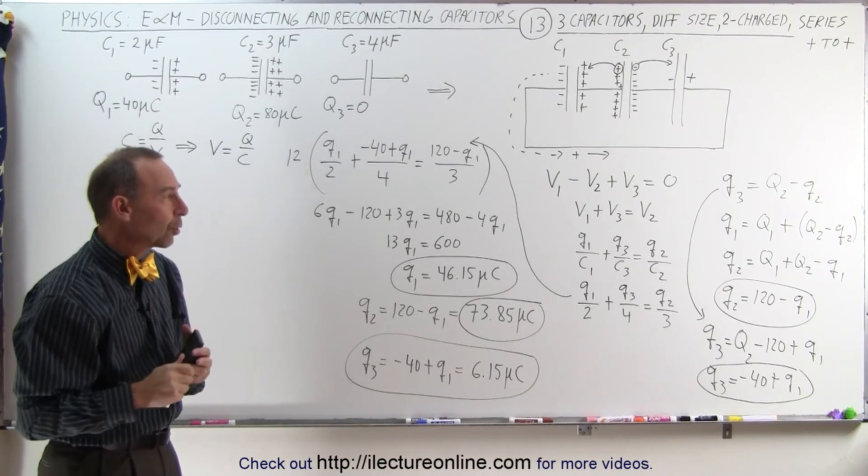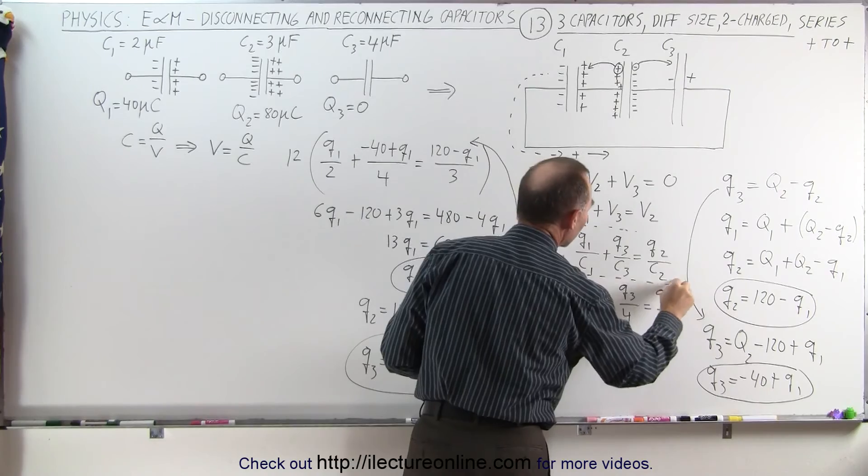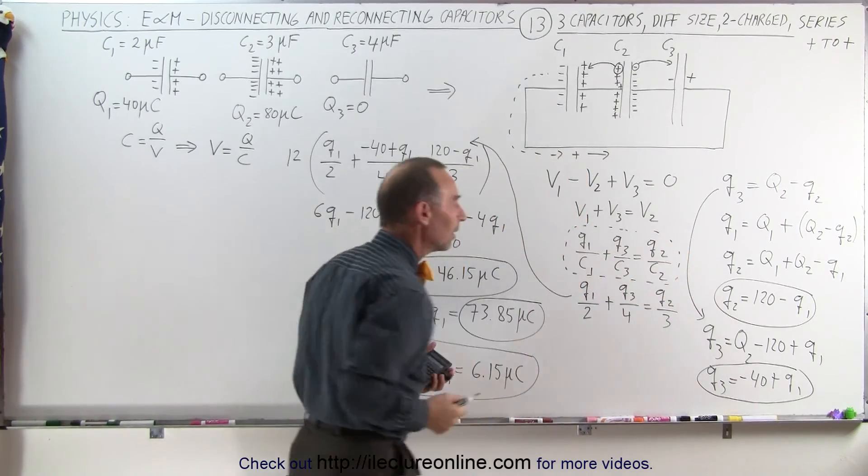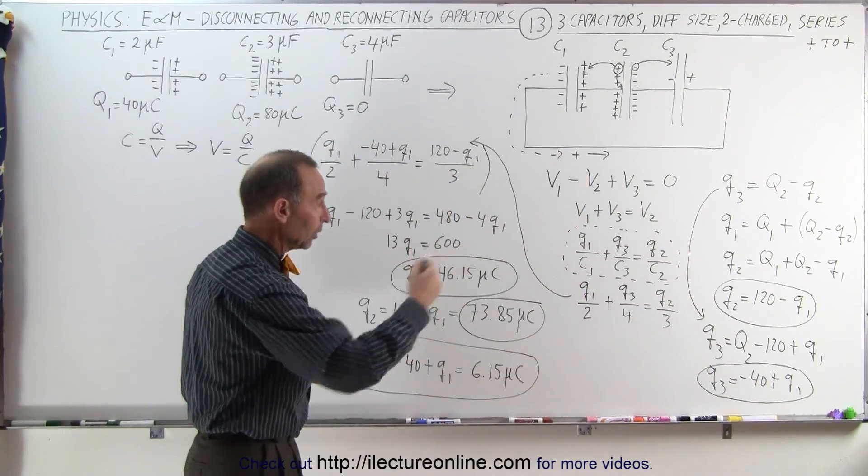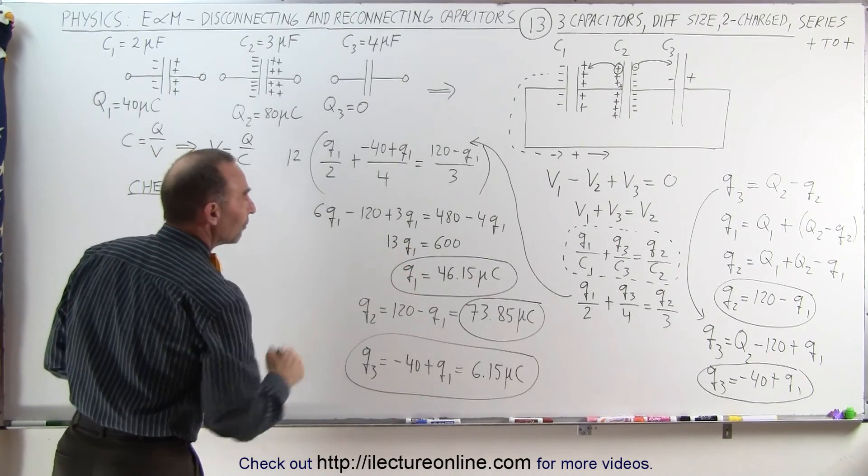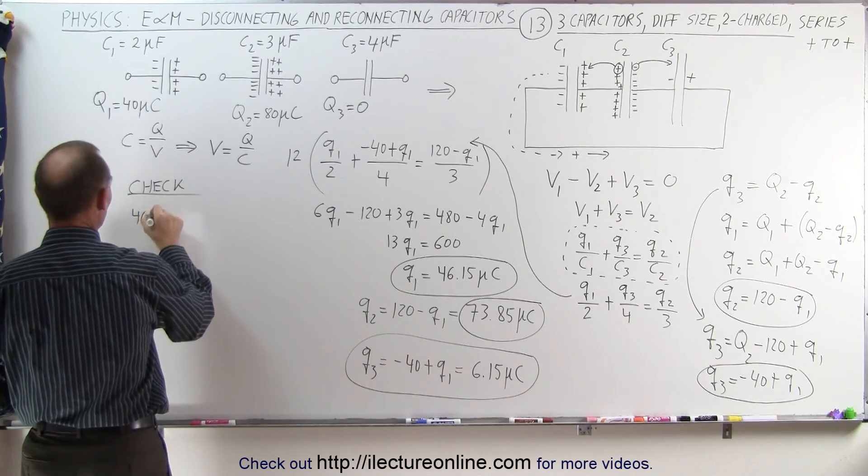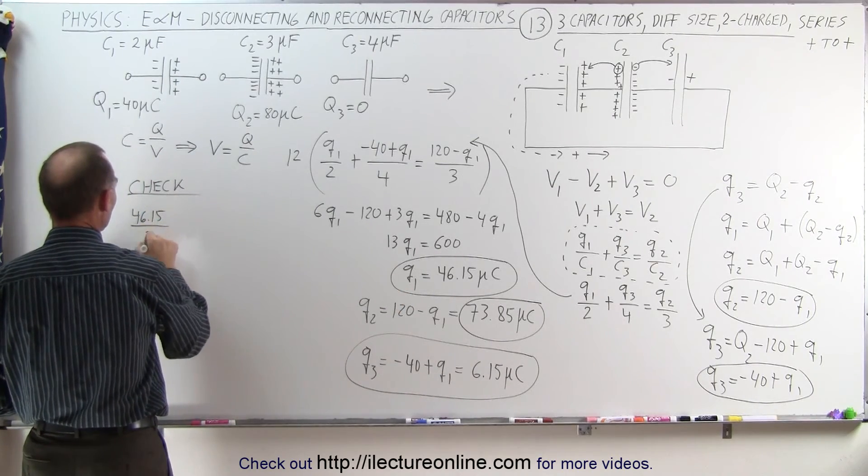To make sure we did it correctly, we can go back to this equation right here and plug in all the Qs and Cs to make sure that this equation matches. In other words, the left side will equal the right side. So we're going to do a check. We have Q1 divided by C1. So Q1 is 46.15 divided by C1, which is 2.